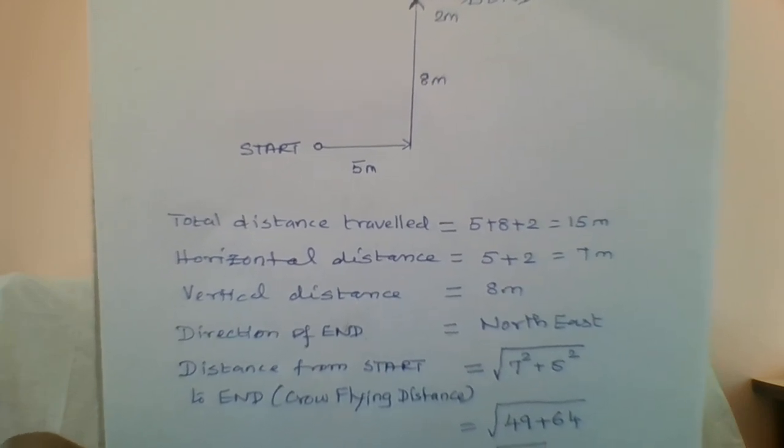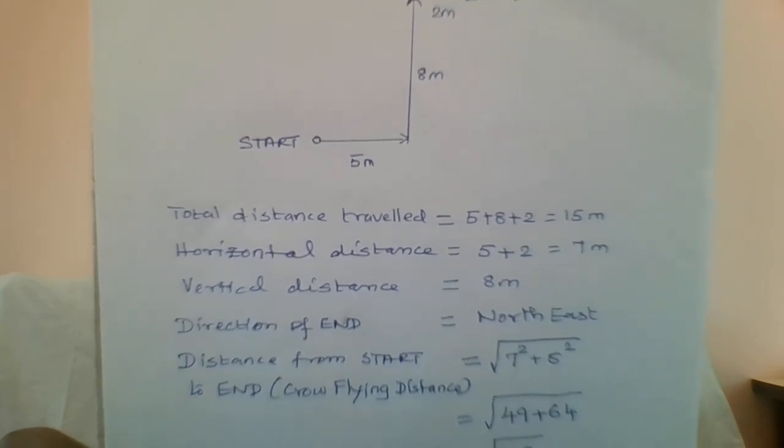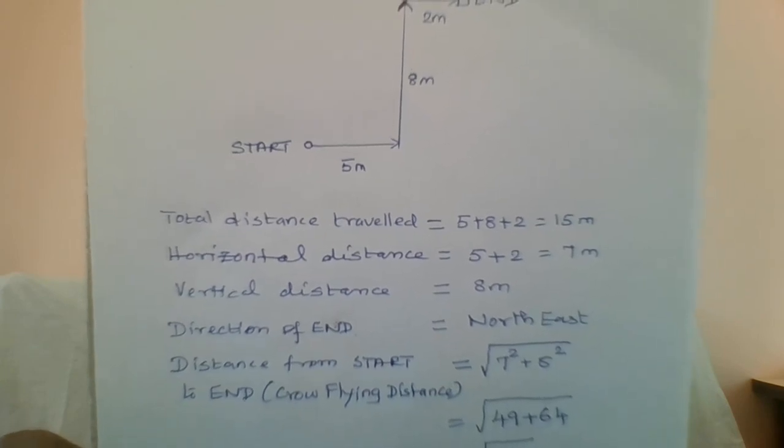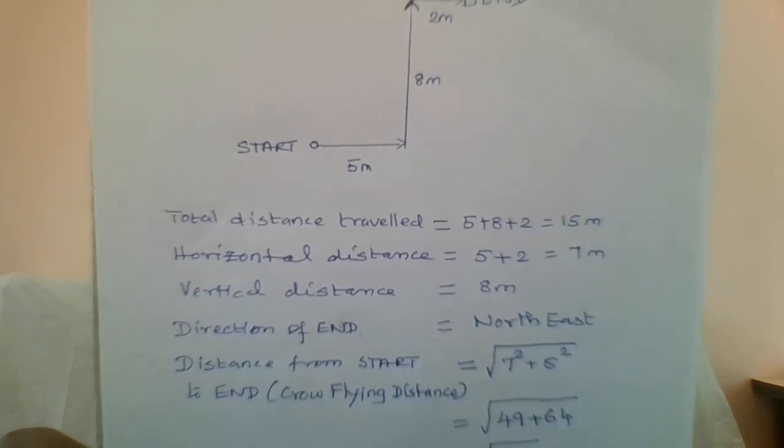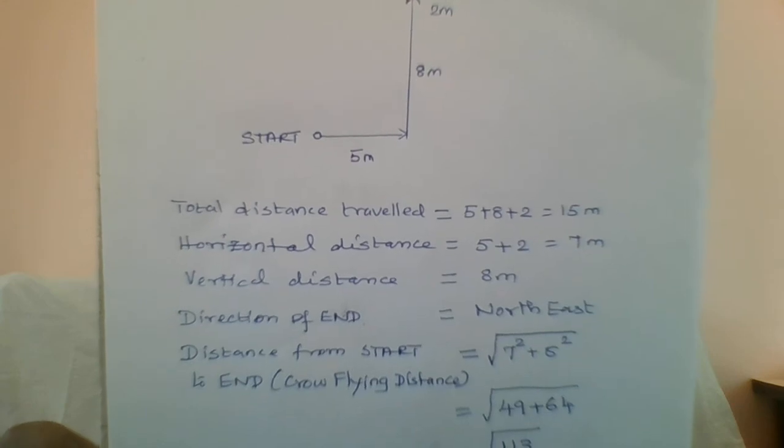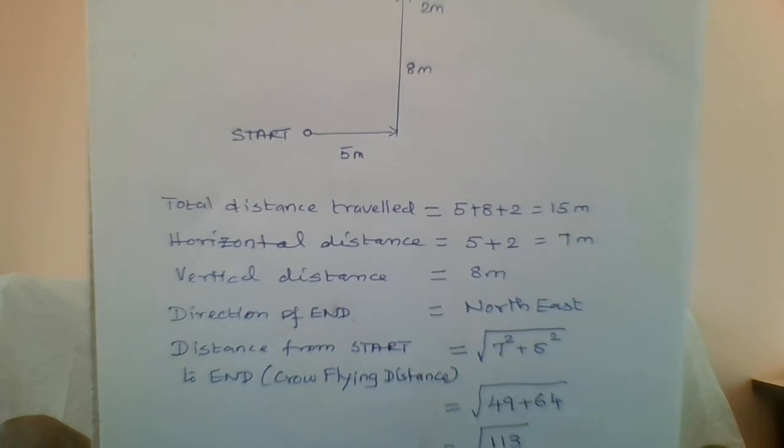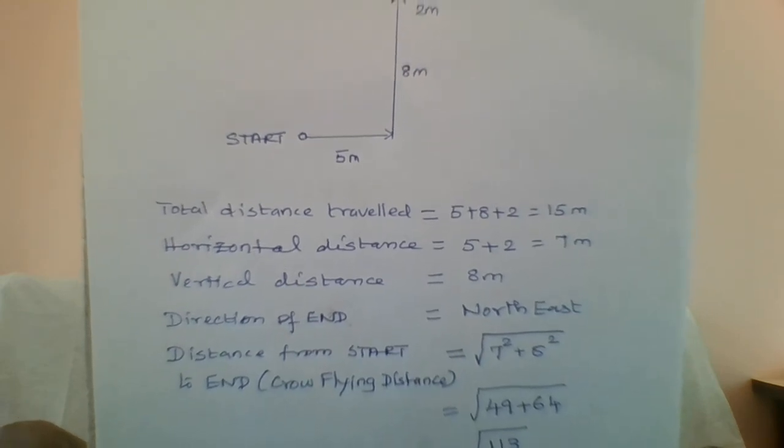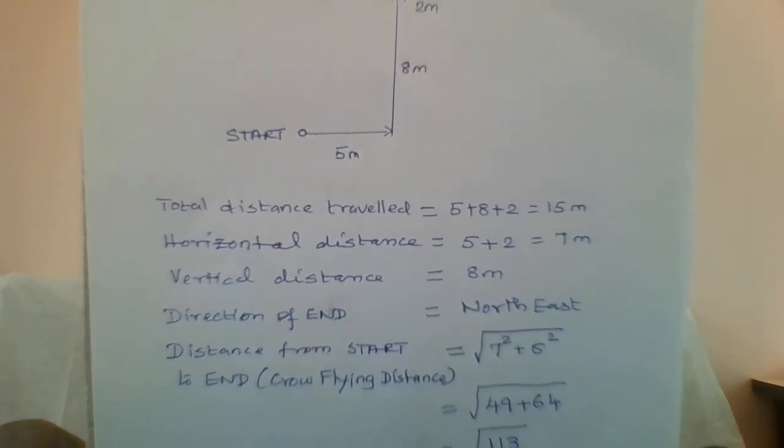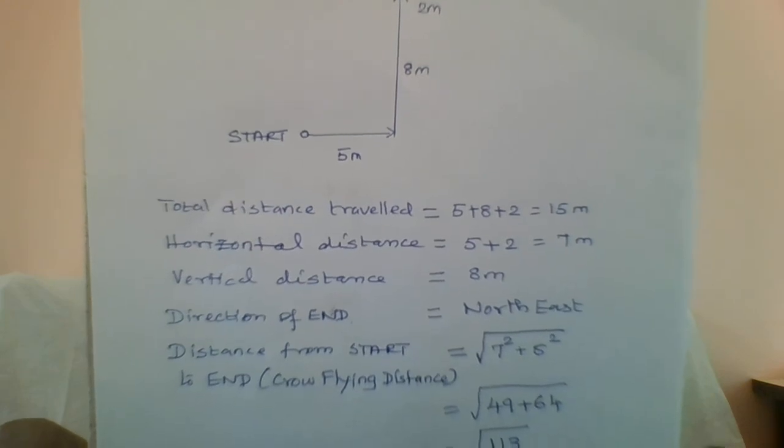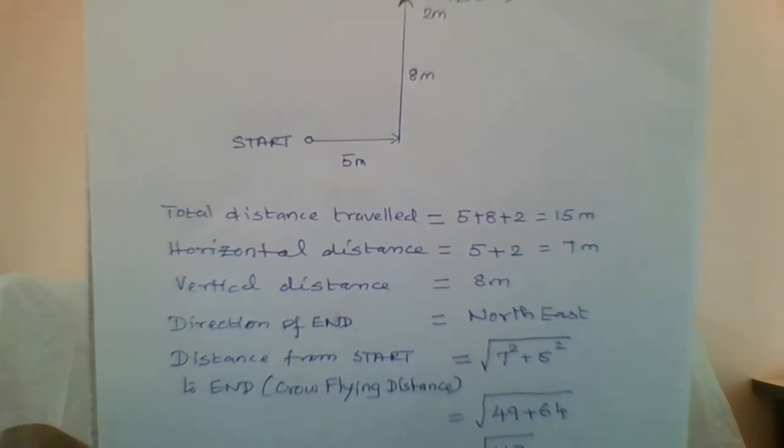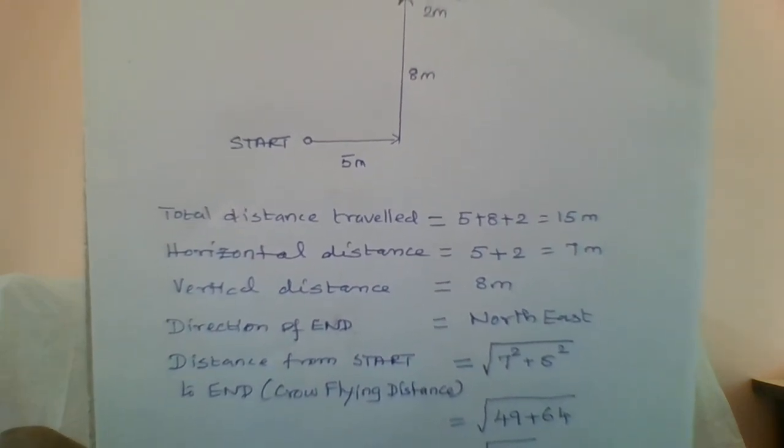So the distance from the start point to the end point is equal to root of horizontal distance squared plus vertical distance squared. That is equal to root of 7² + 8². That is equal to root of 49 + 64. That is root 113.